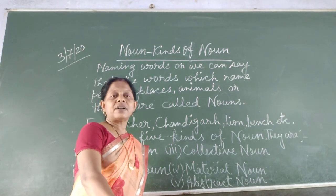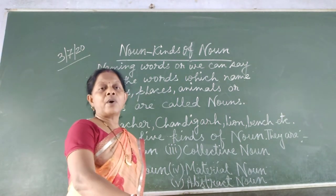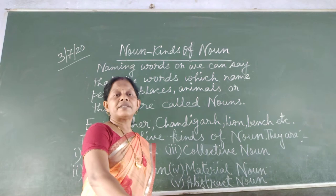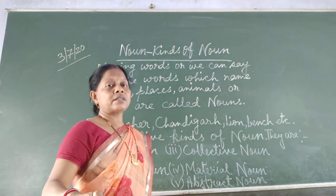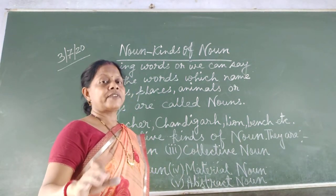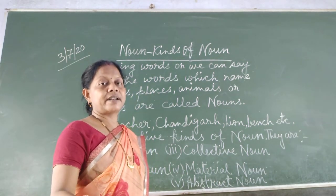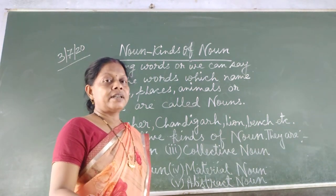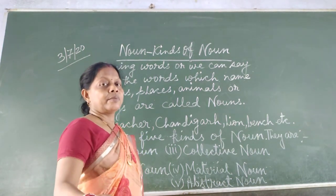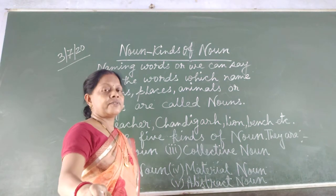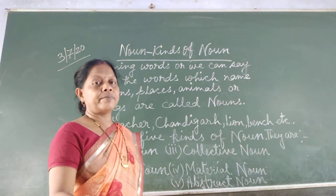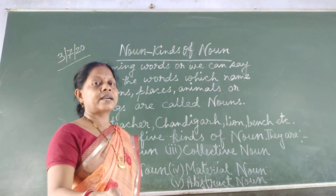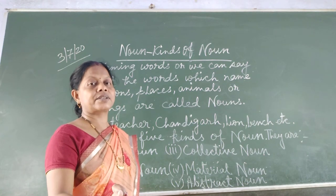Noun is an interesting topic and it is also the first part of speech. There are 8 parts of speech in English grammar: noun, pronoun, adjective, verb, adverb, preposition, conjunction and interjection.